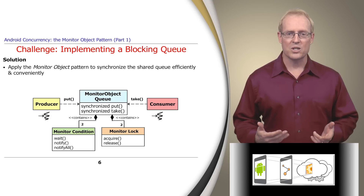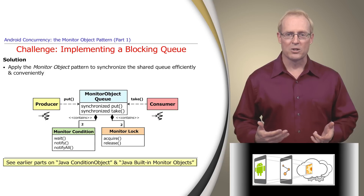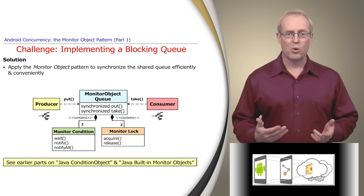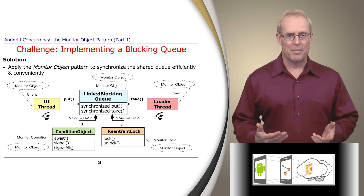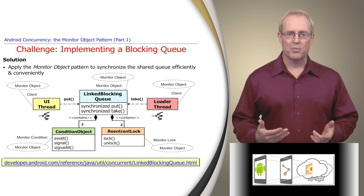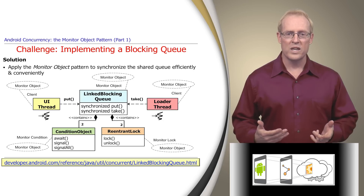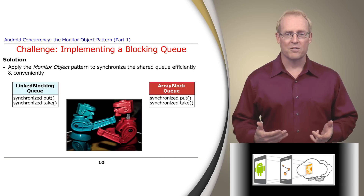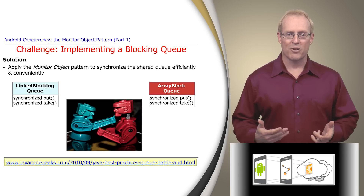Earlier parts of this module have shown implementations of the monitor object pattern in the video on Java condition objects and Java built-in monitor objects. This part expands upon this earlier coverage to examine the pattern more comprehensively, using the Java LinkedBlockingQueue described at this link as a running example to make the discussion more concrete. The LinkedBlockingQueue is similar to the ArrayBlockingQueue examined in an earlier video, and a detailed performance comparison between them appears at this link.